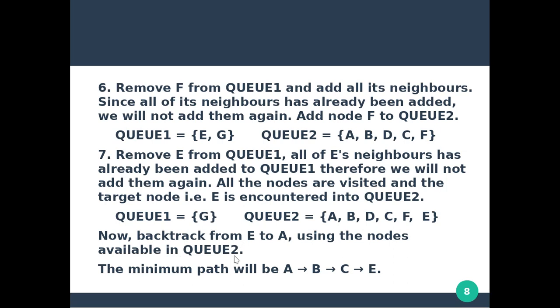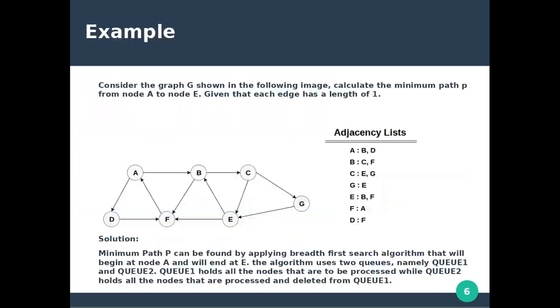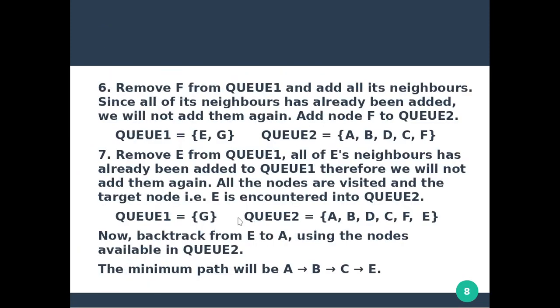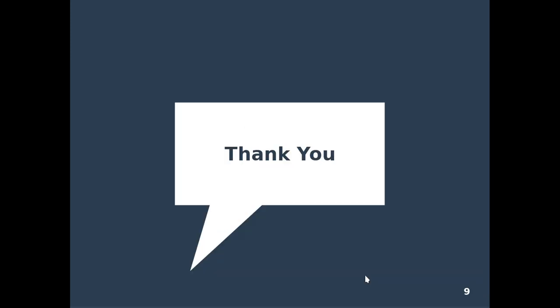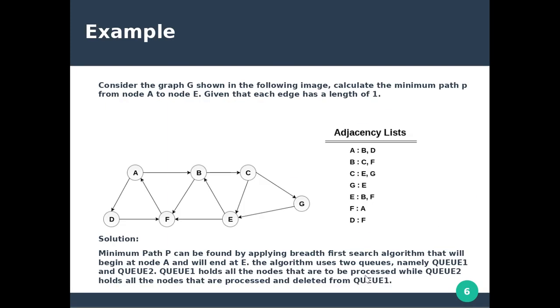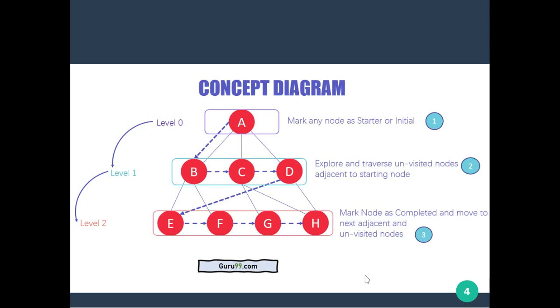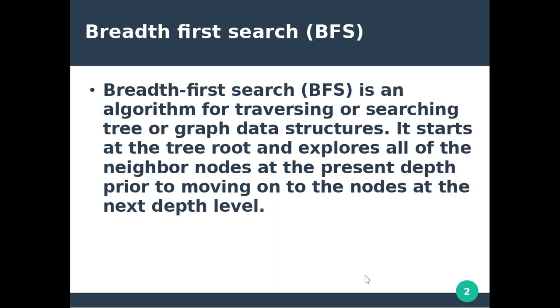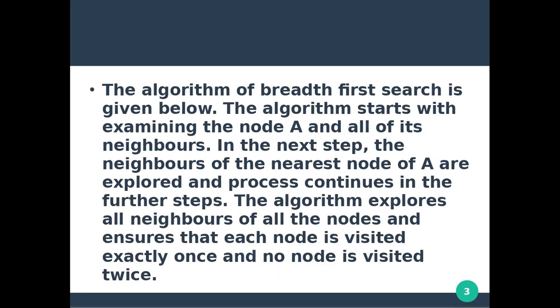Using Q2, we backtrack from E to A to find the minimum path. The minimum path is A, B, C, E. So the minimum path from A to E is A → B → C → E.